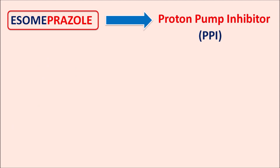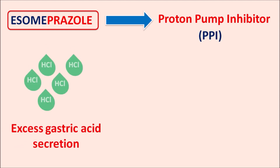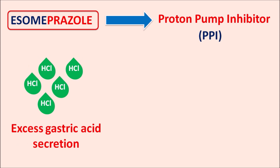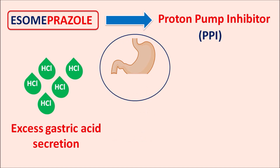Proton pump inhibitors are particularly used when there is excess gastric acid secretion, which may be due to different reasons. One of the conditions is the reflux of gastric acid into the esophagus, resulting in erosive esophagitis and heartburn. This condition is known as GERD, gastroesophageal reflux disorder. In such conditions we can use proton pump inhibitors.